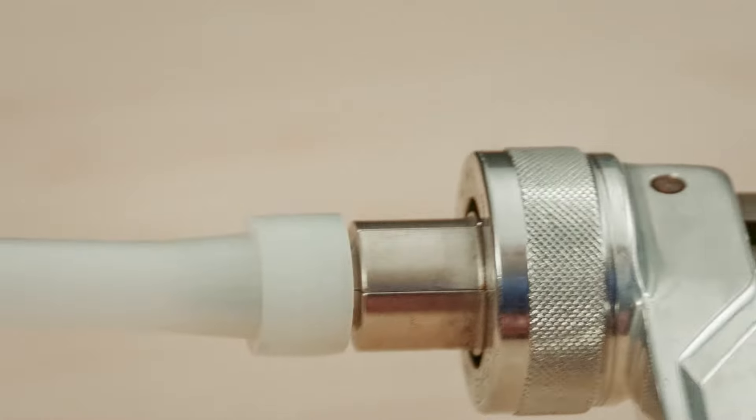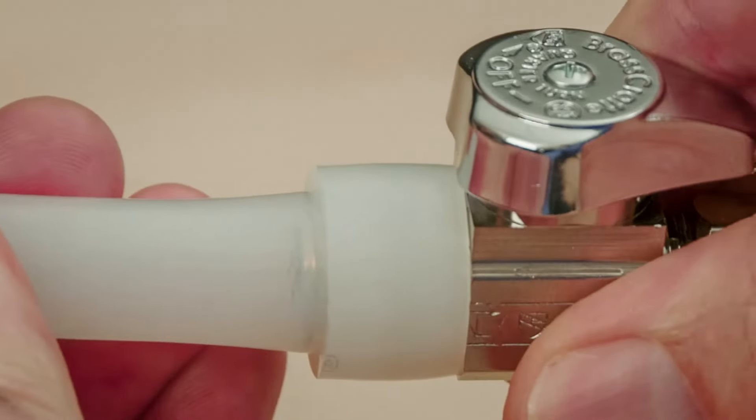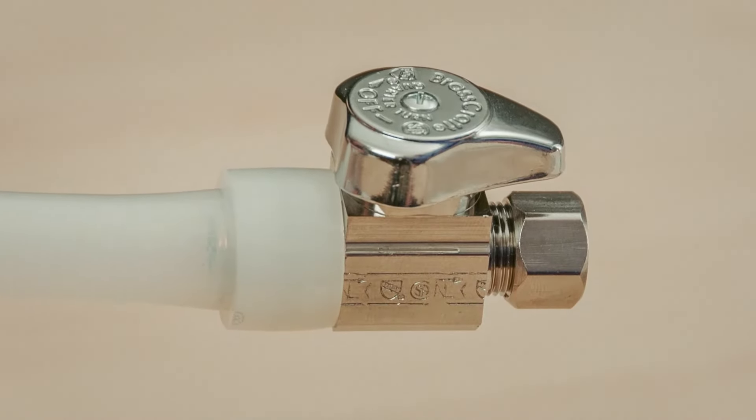After expanding, remove the tool and quickly insert the inlet of the cold expansion water stop into the tube. The tubing will then start to shrink back around the inlet, creating a secure connection.